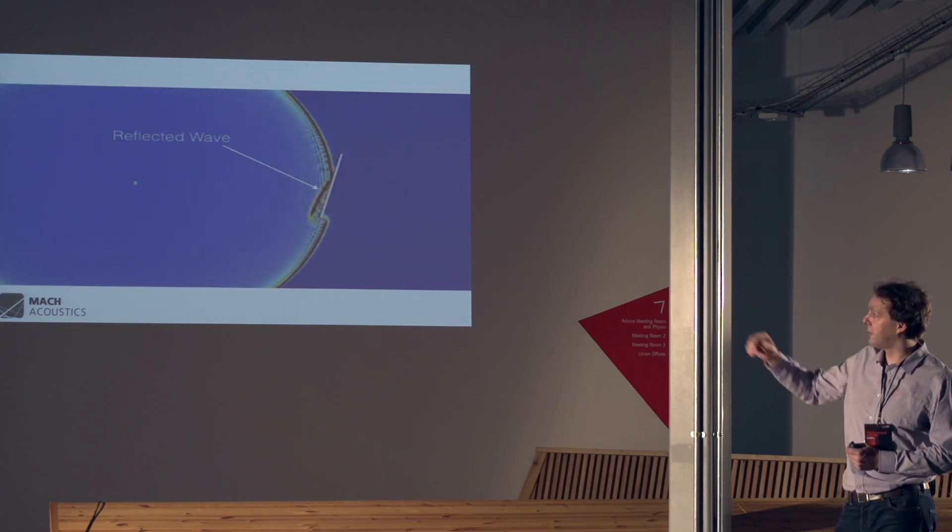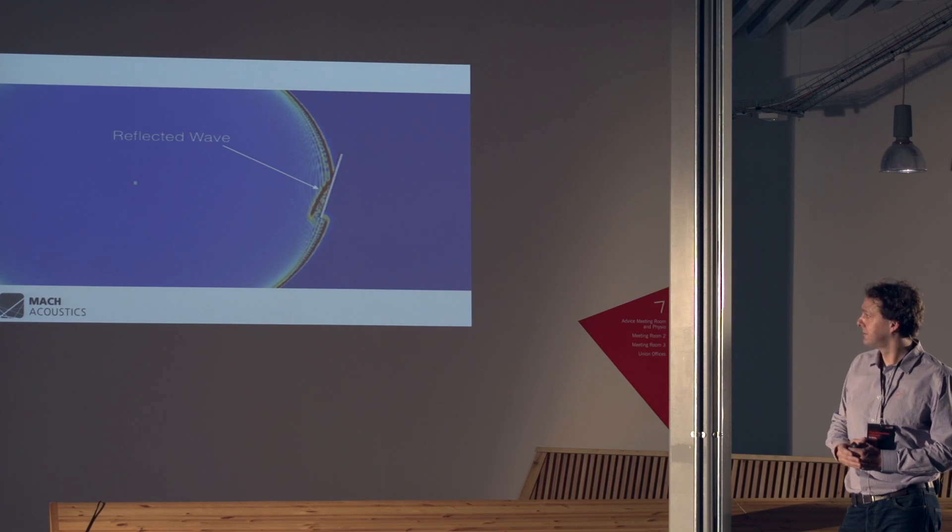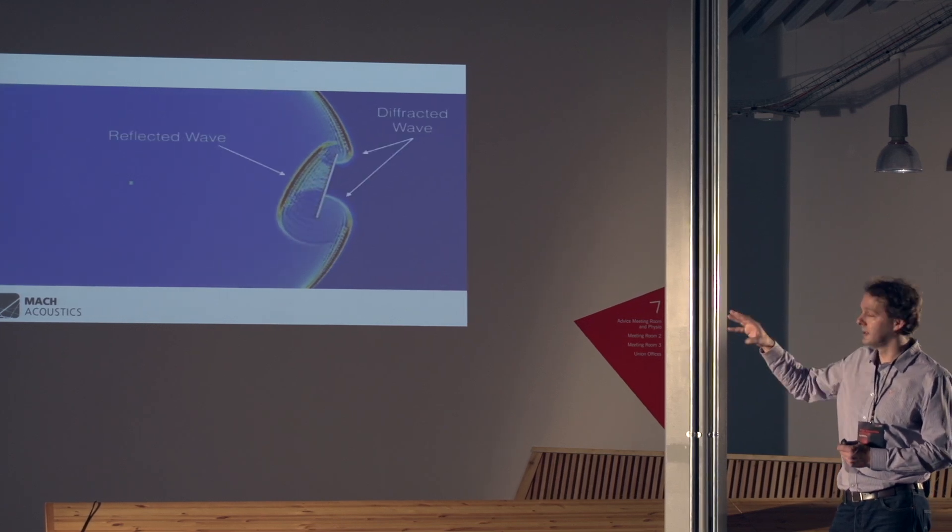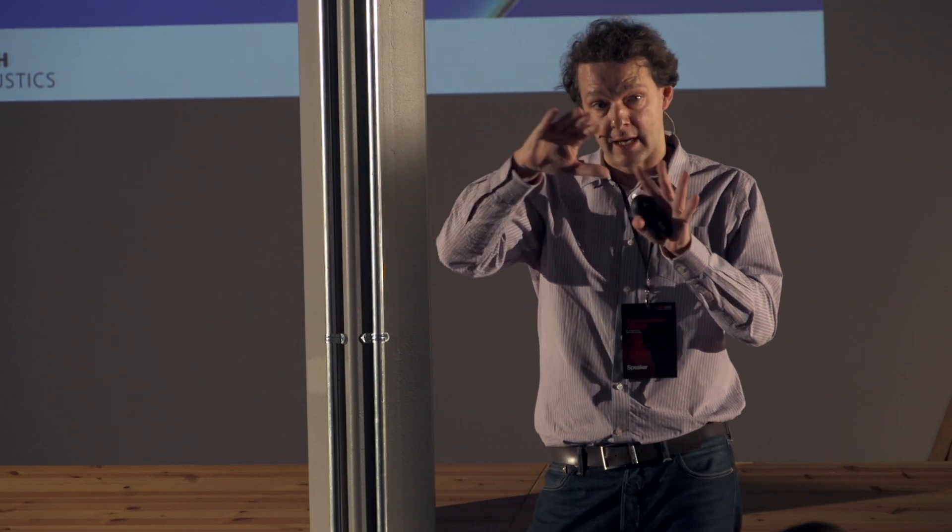And we can now see how it reflects off a structure. And more importantly, diffracts around the structure. This is where the complex math comes in. It's how the sound bends around an object. If you can't see my mouth, you can still hear it. And the reason for that is that sound is bending around my hand.